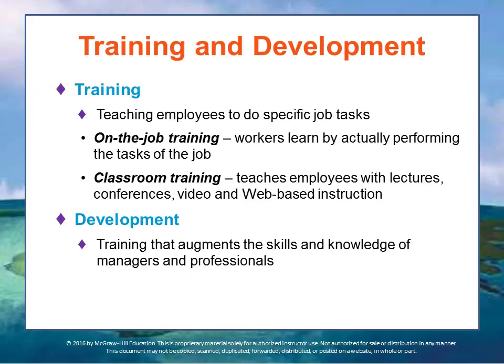Although recruiting and selection are designed to find employees who have the knowledge, skills, and abilities the company needs, new employees still must undergo training to learn how to do their specific job tasks. On-the-job training allows workers to learn by actually performing the tasks of the job, while classroom training teaches employees with lectures, conferences, videotapes, case studies, and web-based training.